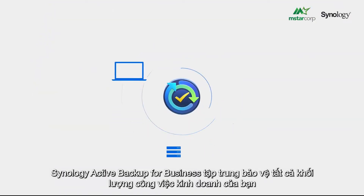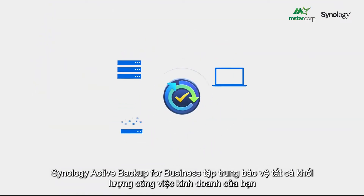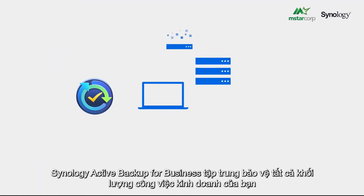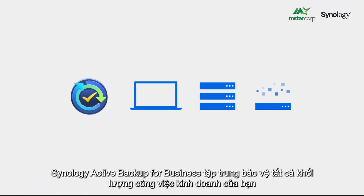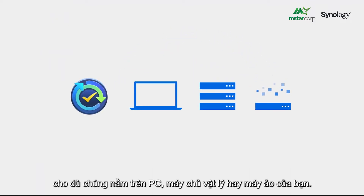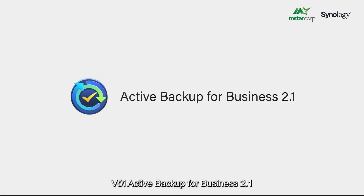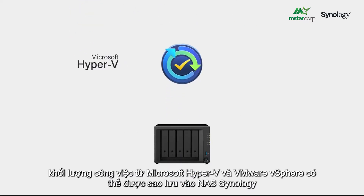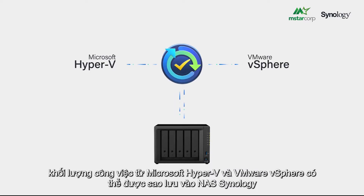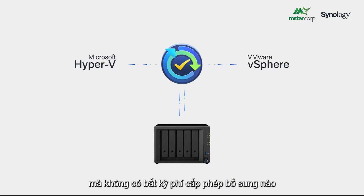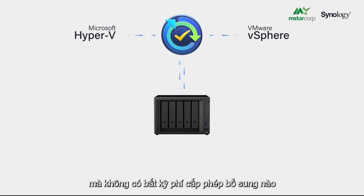Synology Active Backup for Business centralizes the protection of all your business workloads, whether they are on your PCs, physical servers, or virtual machines. With Active Backup for Business 2.1, workloads from Microsoft Hyper-V and VMware vSphere can be backed up to Synology NAS without any additional license fee.